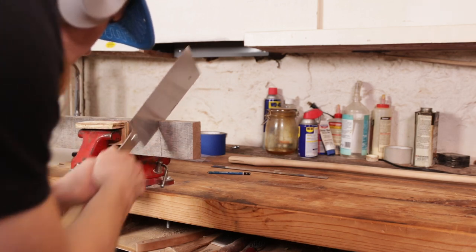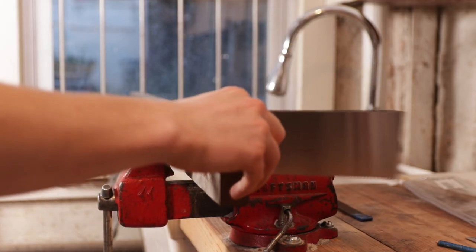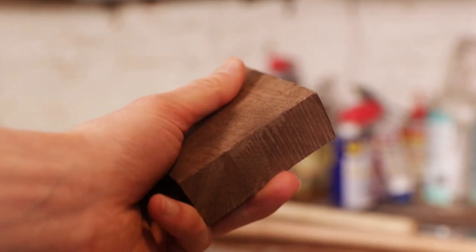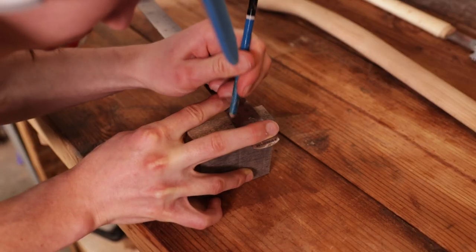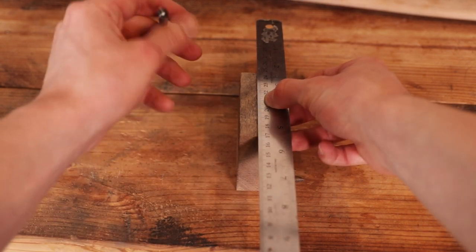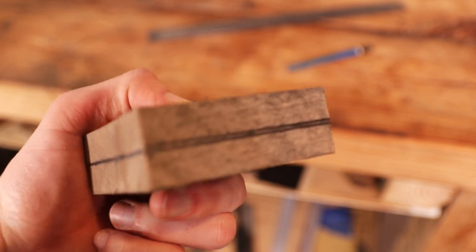The first cut I do determines the length of the scales and doesn't have to be too square or perfect because I'll be trimming off the end of the handle. But when I cut it down the middle, that needs to be perfectly symmetrical and square because the surface has to be flat for it to glue to the handle properly, and I don't want it getting asymmetrical at all.